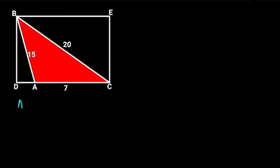From Heron's formula, the area of triangle ABC is the square root of S times S minus A times S minus B times S minus C, where S is A plus B plus C all divided by 2, and ABC are the sides of the triangle.